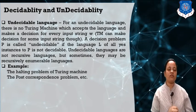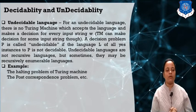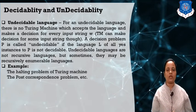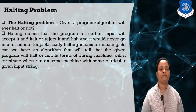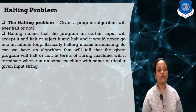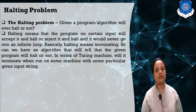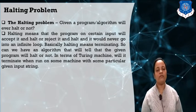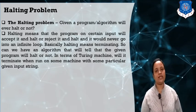Some examples of undecidable problems include the halting problem of a Turing machine and the Post Correspondence Problem. The halting problem asks: given a program or algorithm, can we tell whether it will ever halt or not? Halting means the program on a certain input will accept and halt, or reject, but never go into an infinite loop. Basically, halting means terminating.